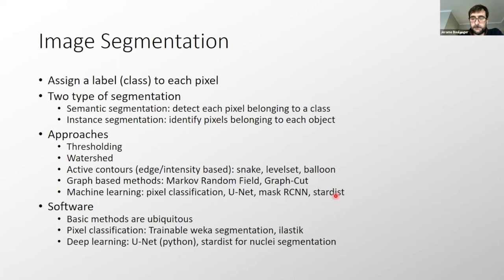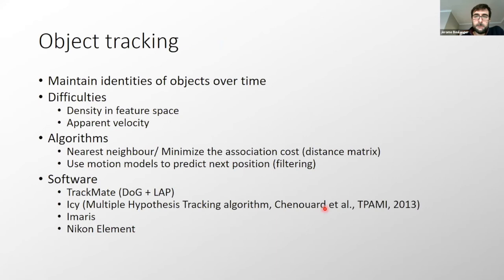In Fiji, you would have access to StarDist which is geared toward convex regions such as nuclei for example. From software point of view, the basic methods are ubiquitous. You can find them everywhere: thresholding, watershed or even active contour. You can have access to pixel classification using Trainable Weka Segmentation in Fiji or ilastik which is a standalone tool. You can have access to deep learning tools in Python or even in Fiji now for some of the tools.